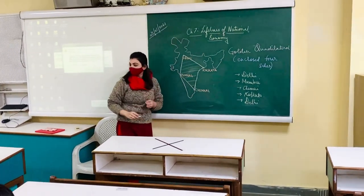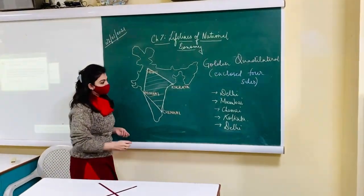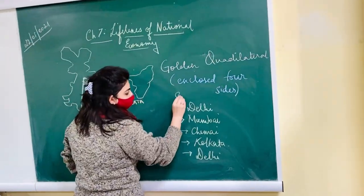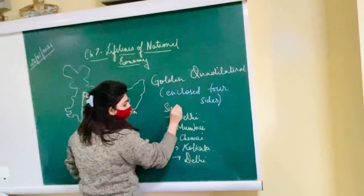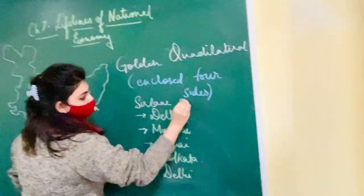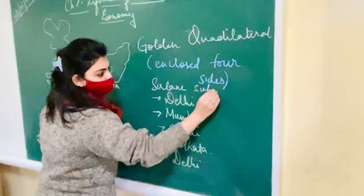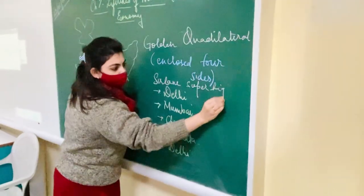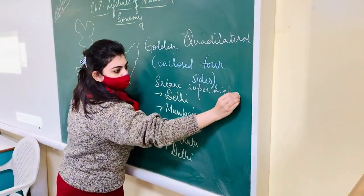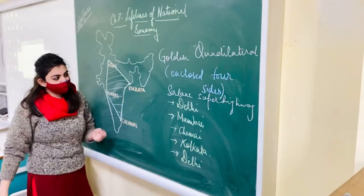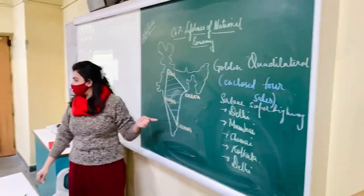So we have the Golden Quadrilateral as a 6-lane superhighway, which has been connecting the 4 mega cities in India.